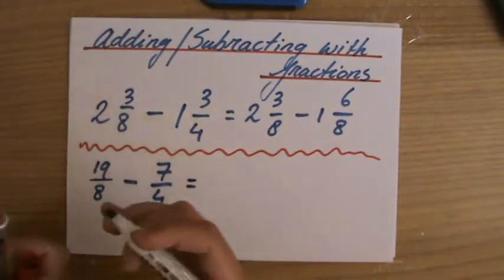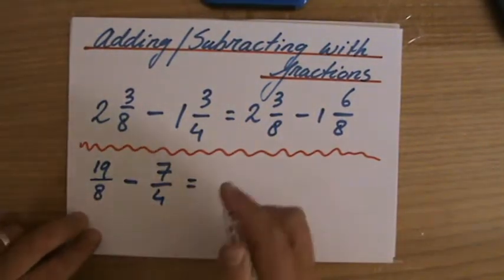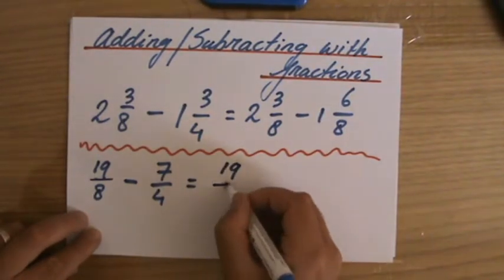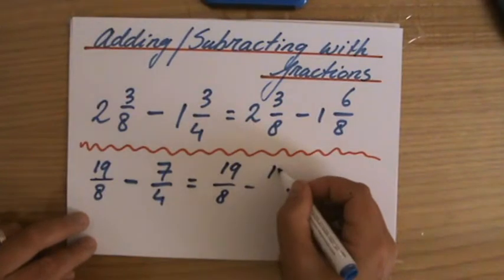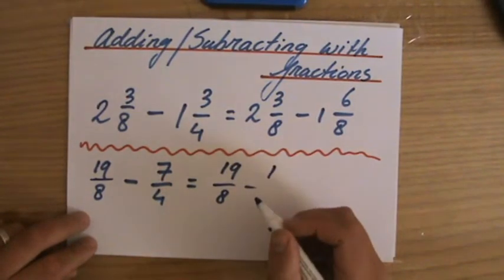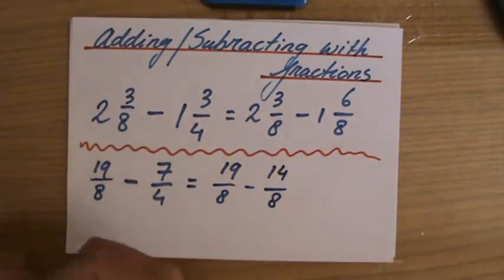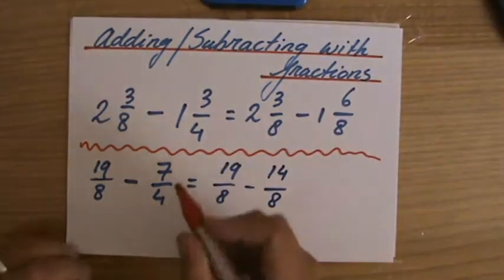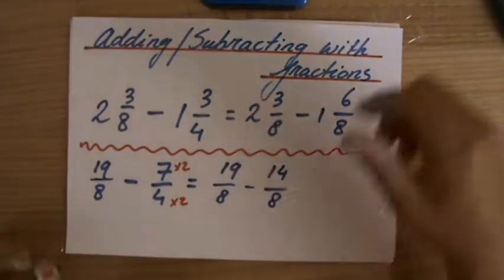Then you manipulate them so they have equal denominators. Well, their common multiple is 8, so 19/8 take away, multiply that one by 2, by 2, 14/8. So now those denominators are the same, so I've multiplied by 2, then I can work with them.